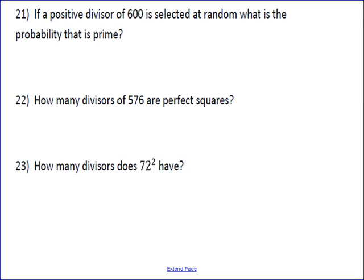Okay, so we're going to look at these five problems as well that are going to look at some more of these lesson problems. The first one says if a positive divisor of 600 is selected at random, what is the probability that it's prime?